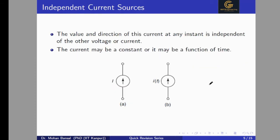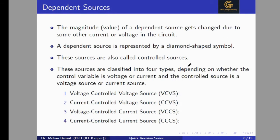Similarly, for the independent current source, the value of the current will not change according to any other value of current or voltage in the circuit. Its current may be constant (DC current) or a function of time (AC current).